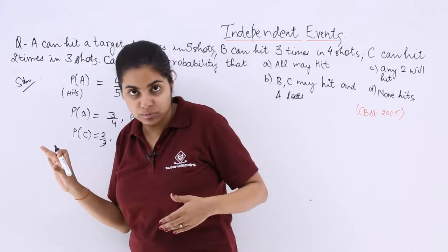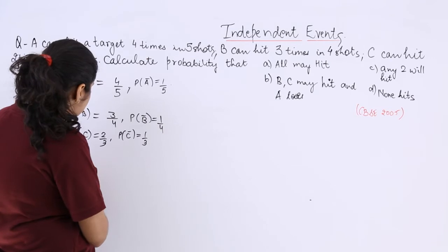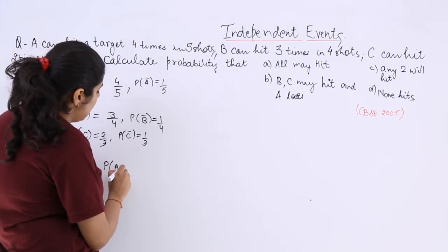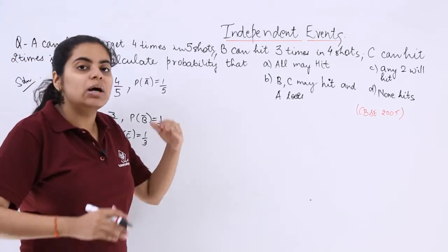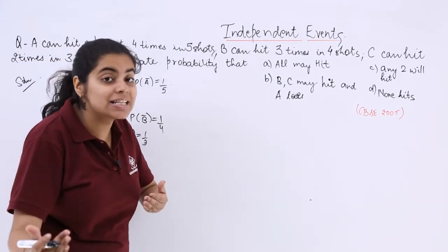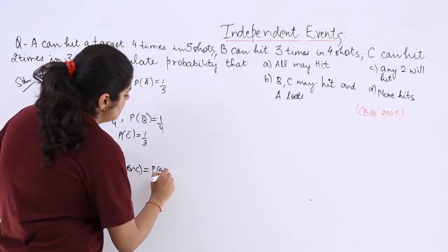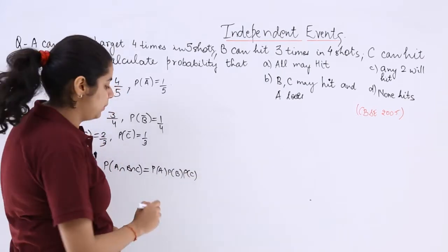Now you have to calculate the probability that the first part all may hit. So the first part I am writing here all may hit means probability of A intersection B intersection C. All may hit. Now their hitting or not hitting does not depend upon the other candidate. So it is a case of independent events.